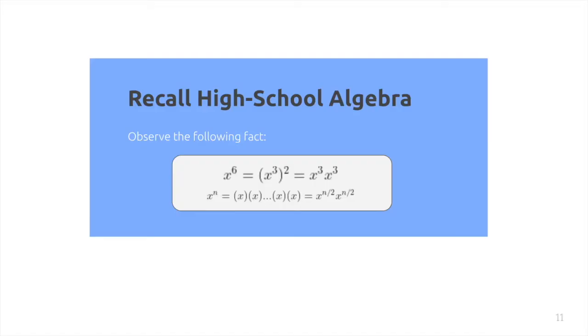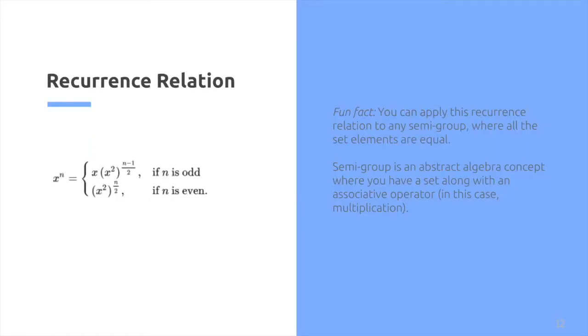If we have x to the power of 6, we can break it down to x to the power of 3 multiplied by itself. Using this we develop a recurrence relation which allows us to take on any number. It simply uses divide and conquer technique to efficiently break it down.